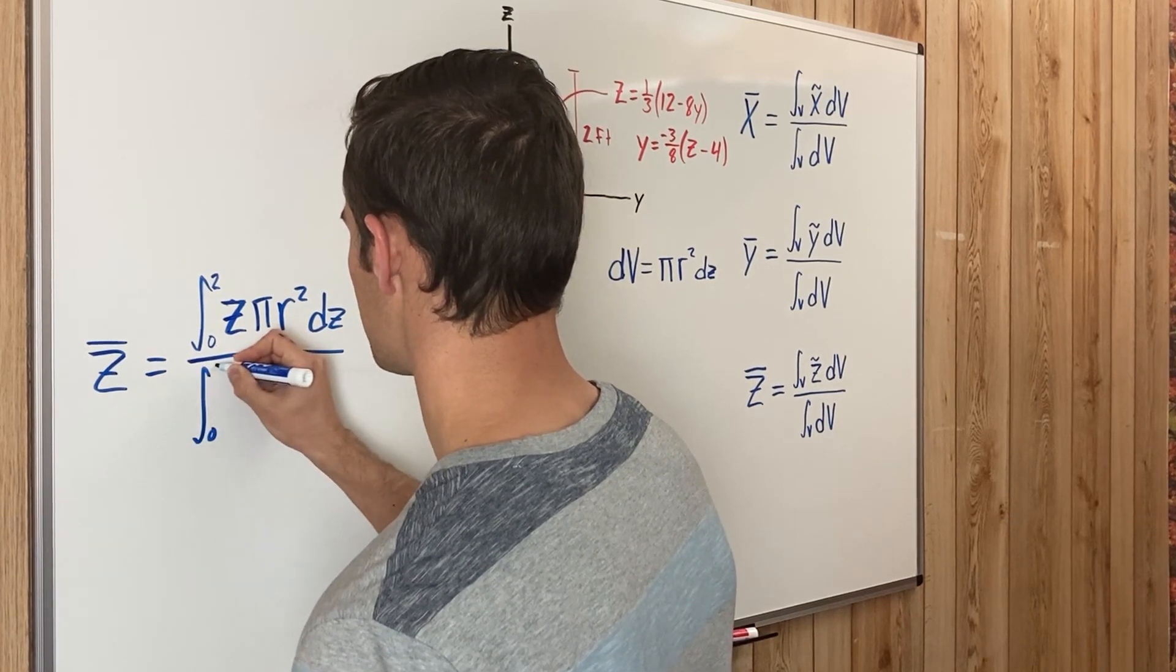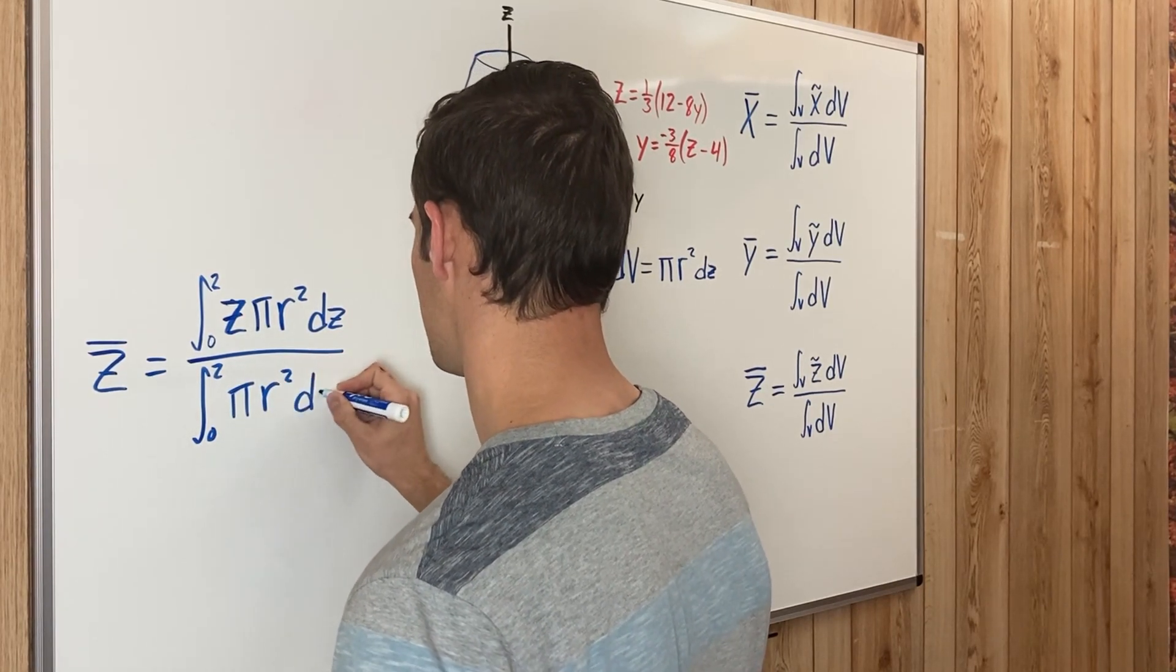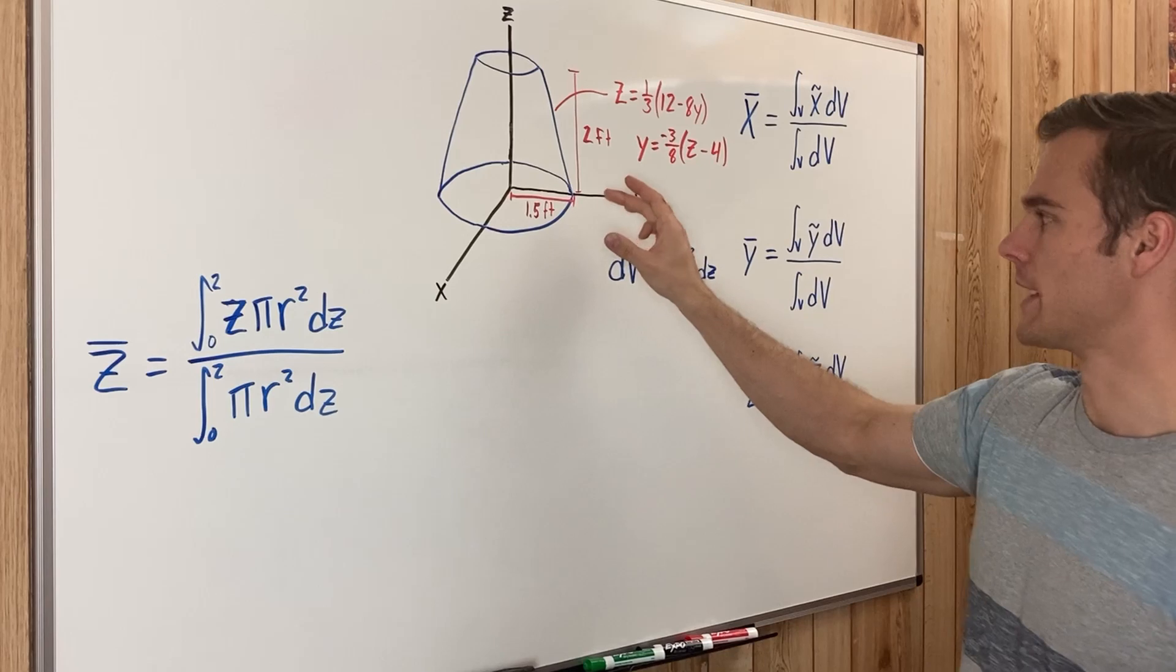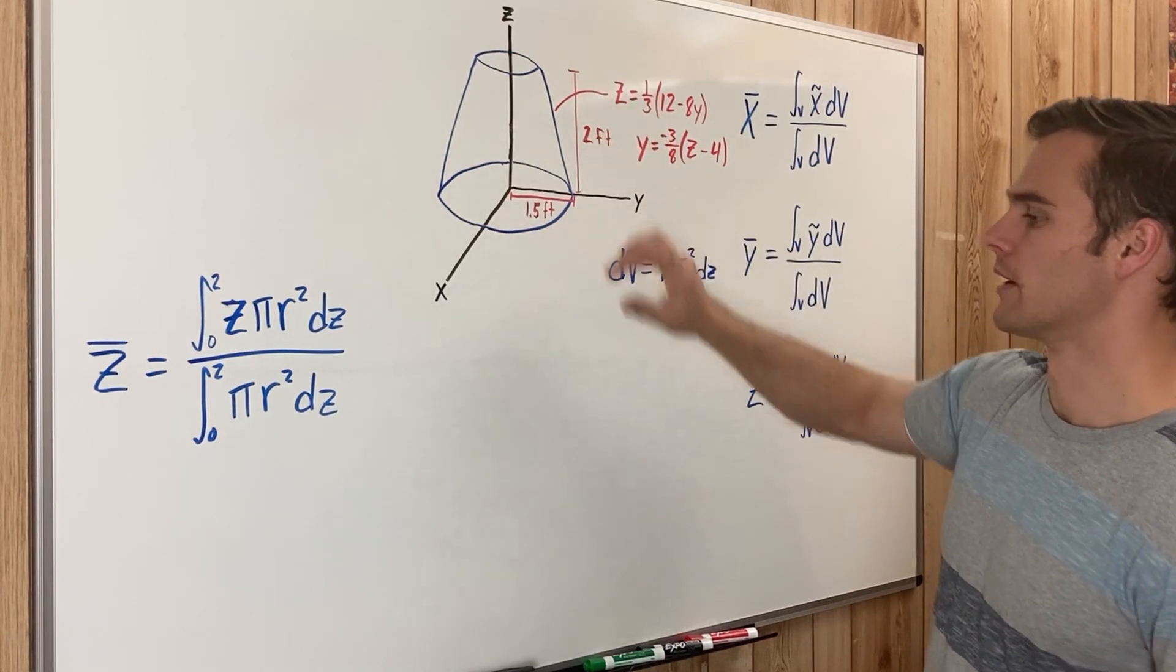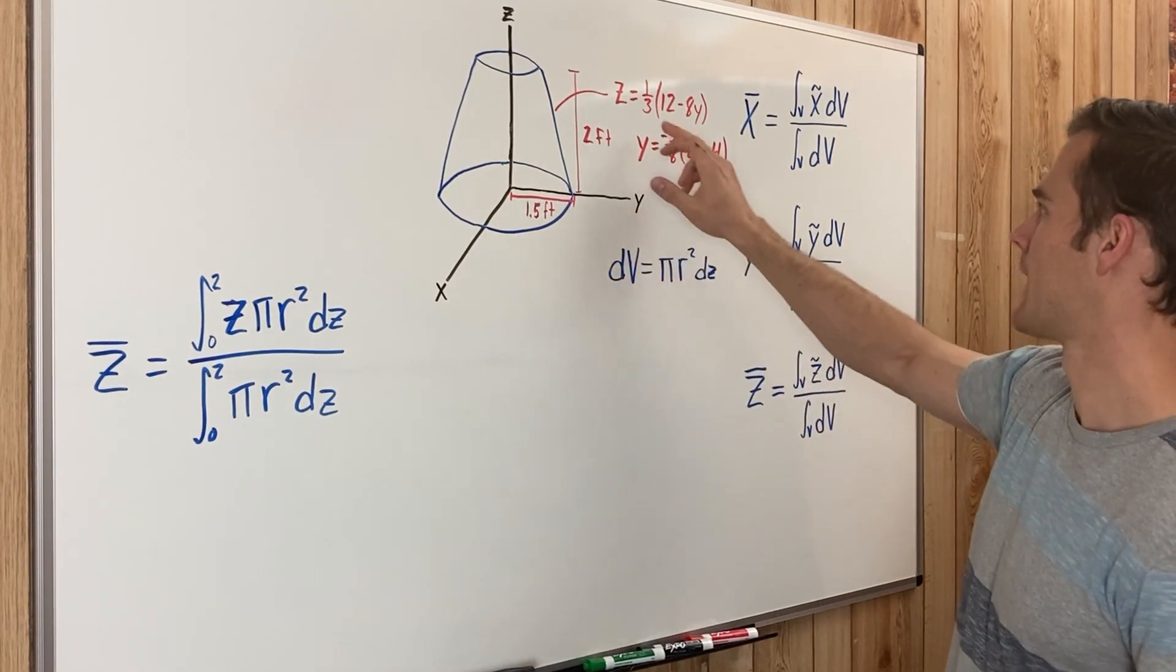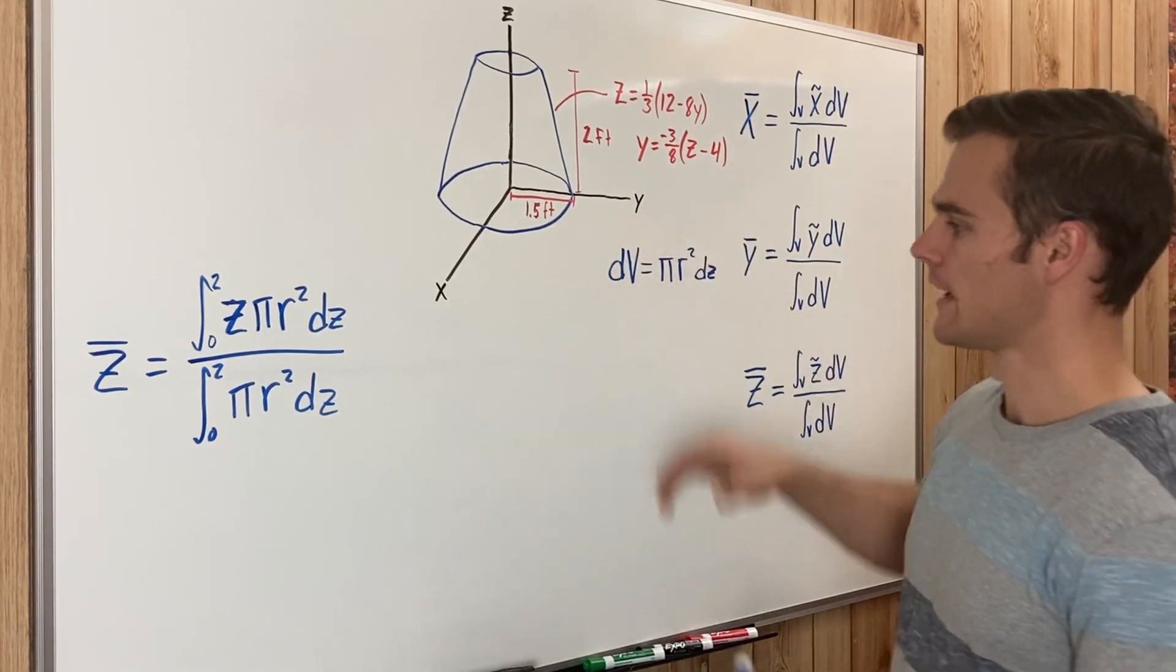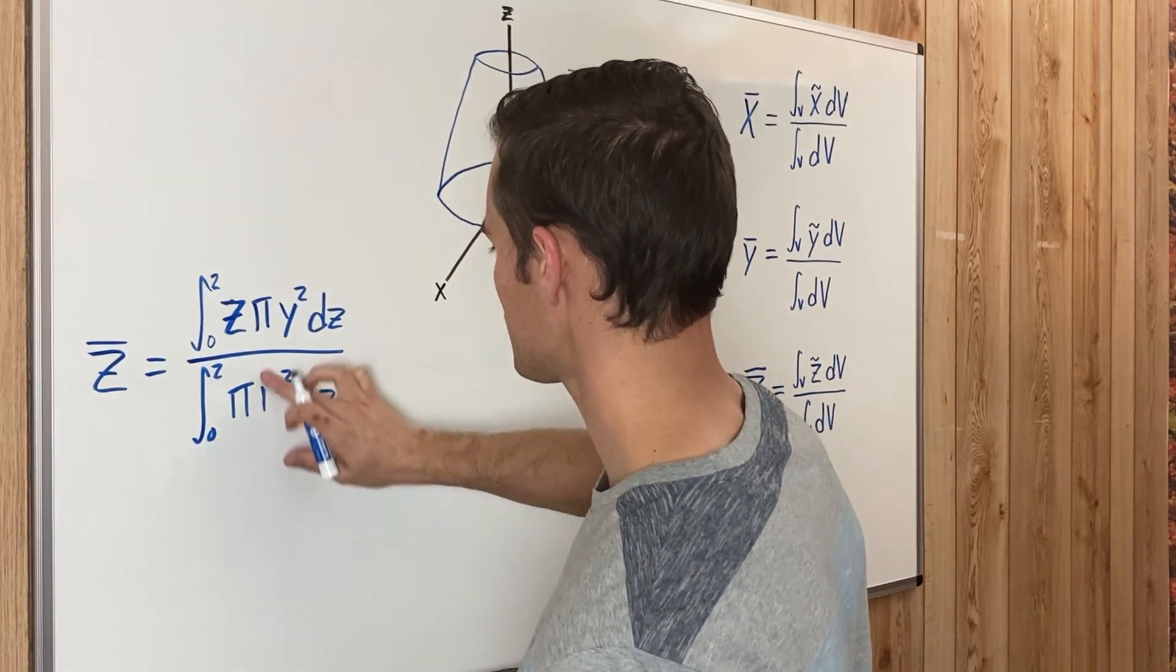And then on the bottom, similarly it's going to be the same just without the Z, so it's going to be πr²dz. But the radius of our disk that we're going to be adding up is just going to be the edge of the cone frustum. That's going to be the radius of each one of those disks that we're adding up to make up the volume of this cone frustum. And because we are integrating with respect to Z, I have this equation which represents the edge of the cone frustum, and that equation solved for Y. So we have just all the Z variables on one side, and so this r is just going to be Y, it's going to be Y squared.